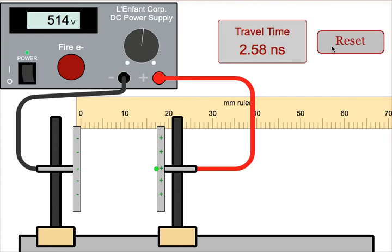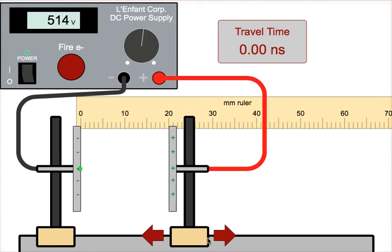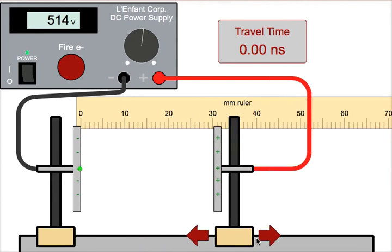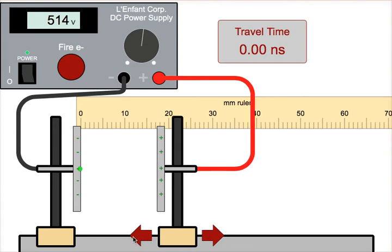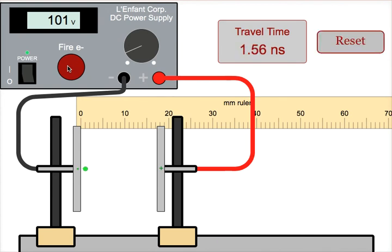We can reset our system and change the position of the plates, changing how far apart the plates are. We can also change the voltage between the two plates and fire our electrons again.